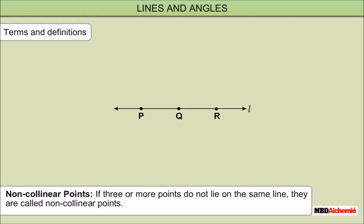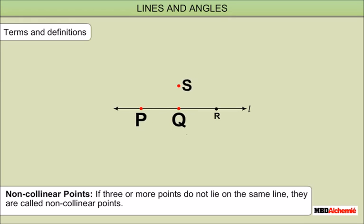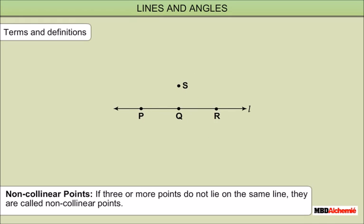Non-Collinear Points: If three or more points do not lie on the same line, they are called Non-Collinear Points. For example, in the above figure, P, Q, S or P, R, S or Q, S, R are Non-Collinear Points.